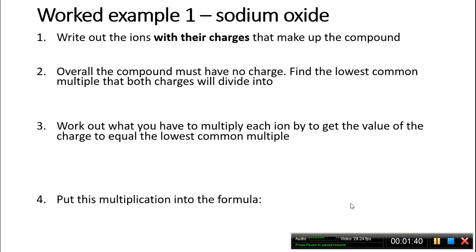The best way to show you this is via an example. The first one is sodium oxide. Step 1 is to write out the ions with their charges. In this example, sodium is in group 1 with a 1+ charge, and oxygen is in group 6, so the oxide has a 2- charge.